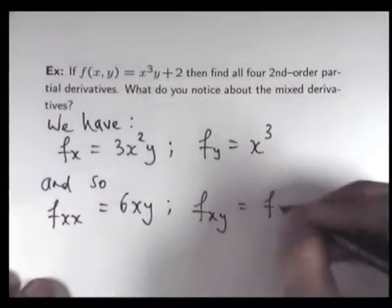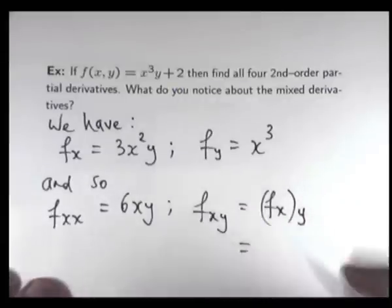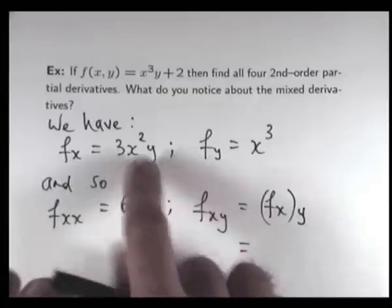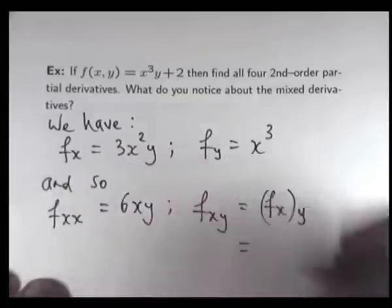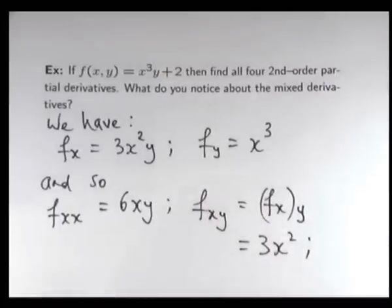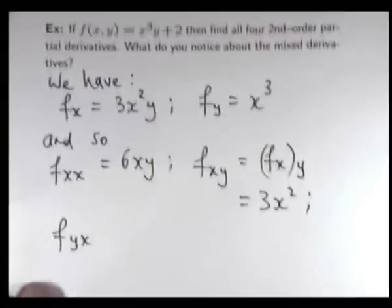So we go up to f sub x, to calculate f sub x sub y. By that, we mean the following. So we go up to f sub x and calculate the partial derivative with respect to y. So this is going to become 3x squared.